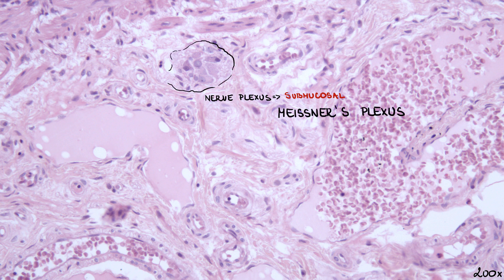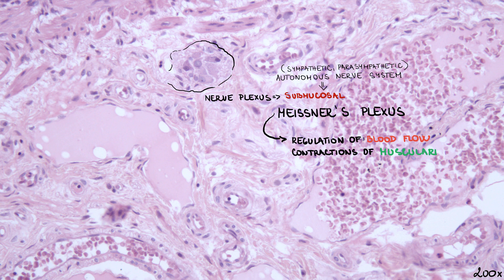This plexus is controlled by the autonomic nervous system — both sympathetic and parasympathetic — and plays a role in regulation of blood flow to the submucosa and mucosa, contractions of the muscularis mucosae, and in secretion of various substances. We can see some ganglionic neurons here.